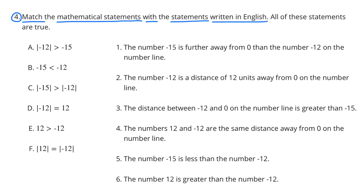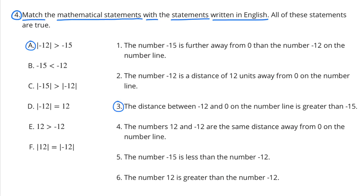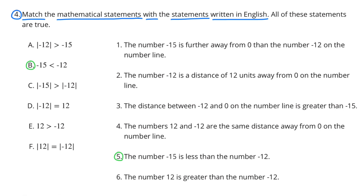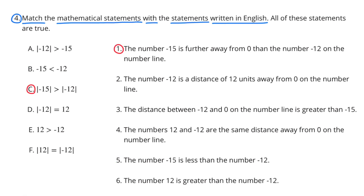Number 4. Match the mathematical statements with the statements written in English. All of these statements are true. A. The absolute value of negative 12 is greater than negative 15 — that matches with statement 3: the distance between negative 12 and 0 on the number line is greater than negative 15. B. Negative 15 is less than negative 12 — that matches with statement 5: the number negative 15 is less than the number negative 12. C. The absolute value of negative 15 is greater than the absolute value of negative 12 — that matches with statement 1: the number negative 15 is further away from 0 than the number negative 12 on the number line.